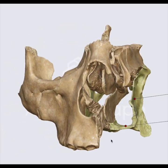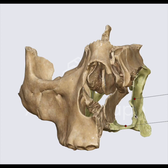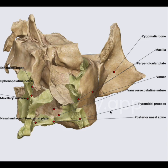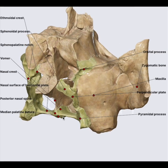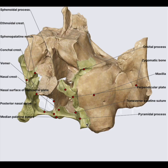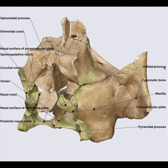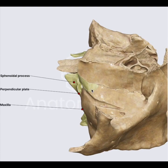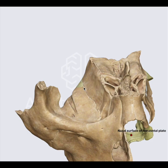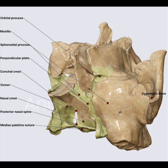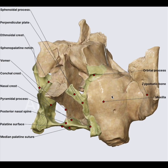Each bone consists of a horizontal plate and a perpendicular plate, and it has a few processes. The first one is a pyramidal process. The second is an orbital process — this structure forming a part of the orbit is the orbital process. The third is the sphenoidal process, which articulates with the sphenoid bone.